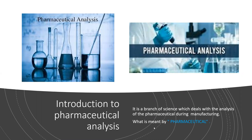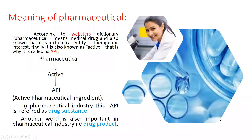Here, what is meant by pharmaceutical? According to Webster's dictionary, a pharmaceutical is a medical drug, also known as a chemical entity of therapeutic interest. Finally, it is also known as active, which is why it is called API — active pharmaceutical ingredient.